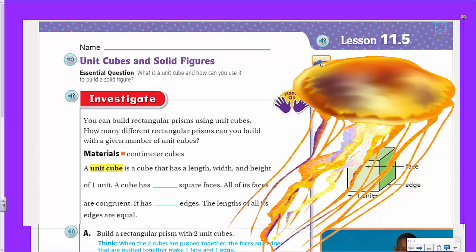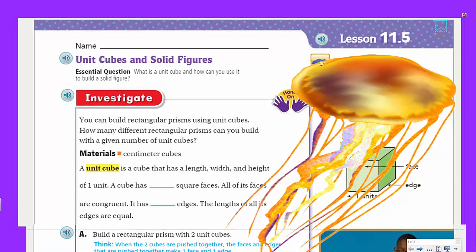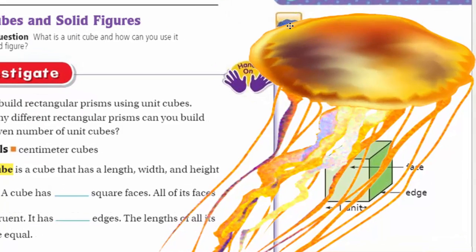Mr. Warra here at your service. What do we have here? Oh, this is our feature. What is that thing on our page? I want to see a feature animal. What a weird looking animal.